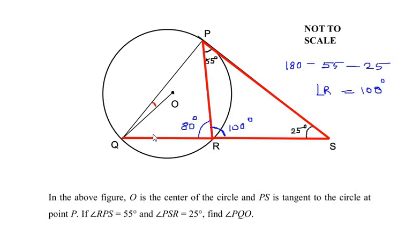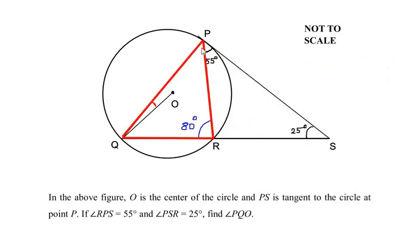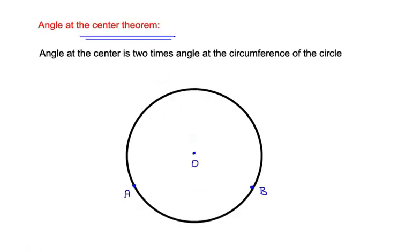To find angle PQO, let us concentrate on triangle PRQ. I am going to make a construction by joining point P with point O. Once we do this, we are going to use the angle at the center theorem. Angle at the center is two times the angle at the circumference of the circle.